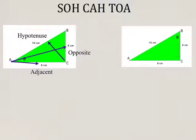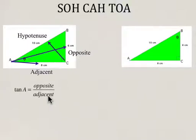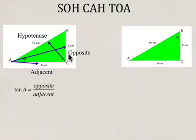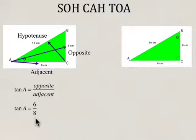Using SOHCAHTOA helps us identify the trig ratios. For tan of angle A, tan is opposite over adjacent — that's the TOA. The opposite side is 6 and the adjacent side is 8, so tan of A is 6 over 8, which reduces to 3 over 4 in simplest form.